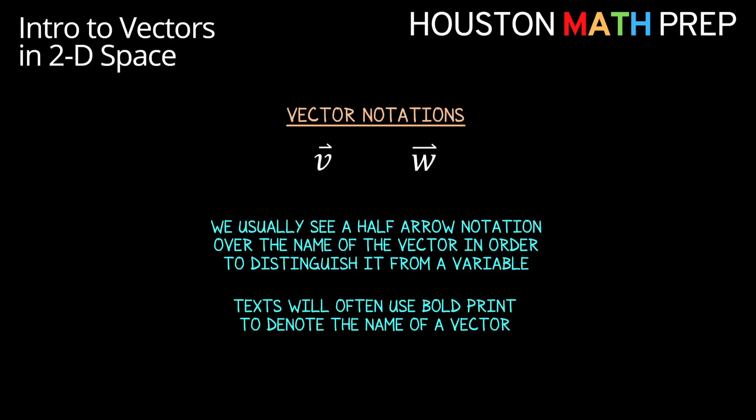Textbooks and articles will sometimes denote a vector by using a bold print V or a bold print W, but when we're writing things by hand, it'll usually be the case that we use some kind of arrow notation.